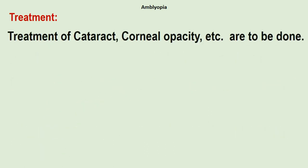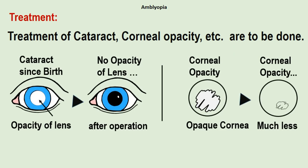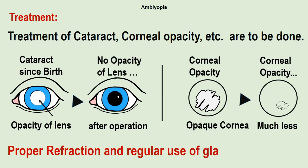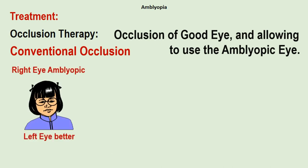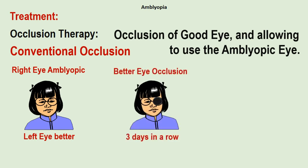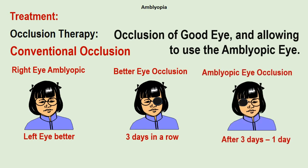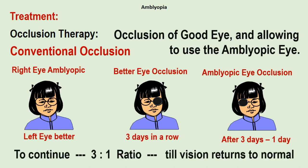Treatment of cataract, corneal opacity, etc., if any, are to be done first. Proper refraction and regular use of glasses if required are also necessary. Occlusion therapy involves occlusion or partial patching of the good eye, allowing the amblyopic eye to be used — this is known as conventional occlusion. For example, if the child has amblyopia in the right eye, spectacle occlusion is done on the left eye — the better eye. This continues for three days in a row, then occlusion is done on the amblyopic eye for one day, keeping the good eye open, in a 3:1 ratio, until the vision of the amblyopic eye returns to normal.